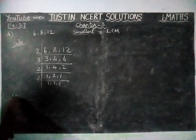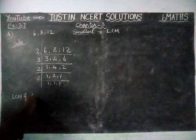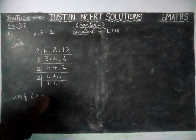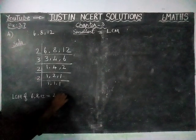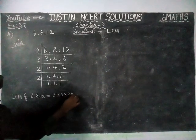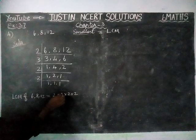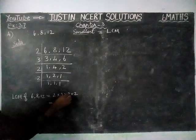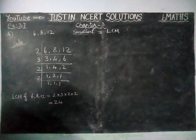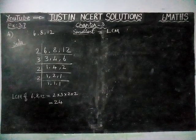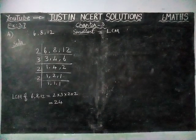LCM of 6, 8, and 12 is equal to 2 × 3 × 2 × 2. That is: 2 threes are 6, 6 twos are 12, 12 twos are 24. So, LCM of 6, 8, and 12 is 24.